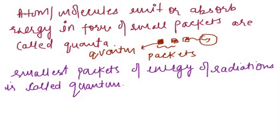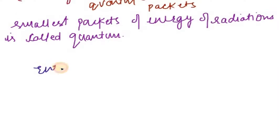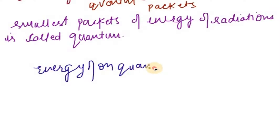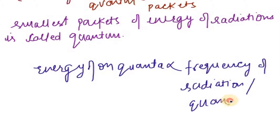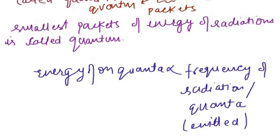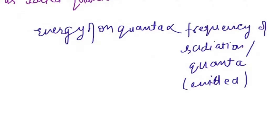The energy of one quantum is directly proportional to the frequency of radiation emitted. So energy E is directly proportional to the frequency ν.